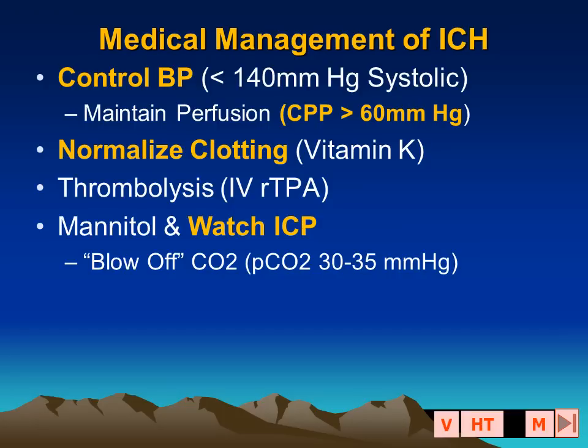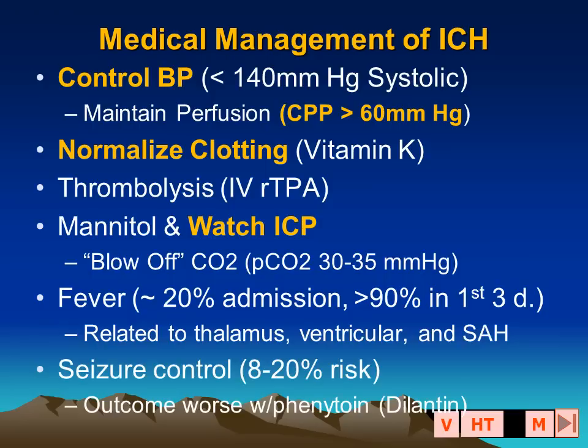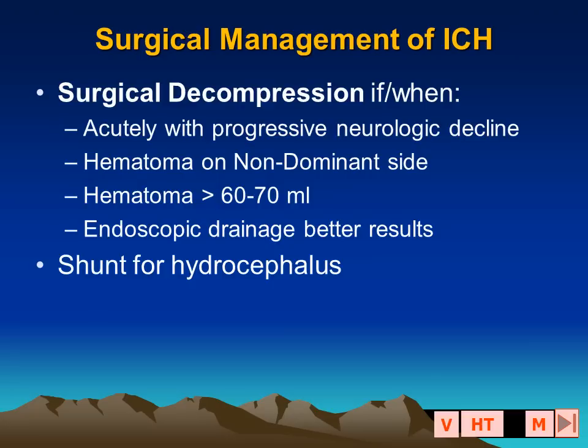We may want to reduce intracranial pressure by reducing the PCO2 by hyperventilating the patient. Up to 90% of patients with an intracerebral hemorrhage will have a fever during the first three days after admission, thought to be related to hemorrhages involving the thalamus or the third ventricle, or extension of blood into the subarachnoid space. Seizures may also occur in up to 20% of patients, and the outcome is worse if Dilantin is used as prophylaxis or therapy.